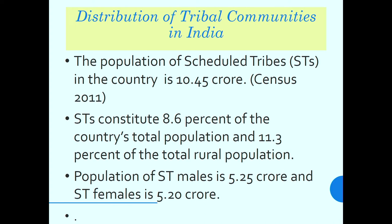Let us understand how tribal communities are distributed in different parts of the country. As per the 2011 census, the population of Scheduled Tribes is 10.45 crore, constituting 8.6 percent of the country's total population. If we talk about the total rural population, they are 11.3 percent of the total rural population. Scheduled Tribes males are 5.25 crore and Scheduled Tribes females are 5.2 crore.